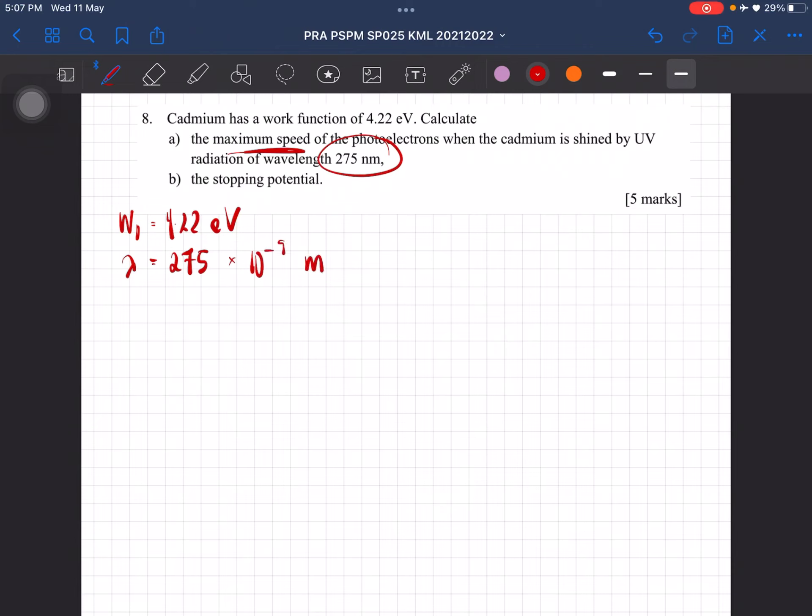Okay, so remember we have to use the SI unit for this part, so we have to multiply this with 1.6 times 10^-19 to get the work function in Joule, so it is 6.75 times 10^-19 Joule, alright?